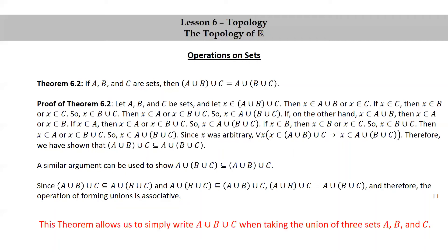This theorem allows us to simply write A union B union C without any parentheses when taking the union of three sets A, B, and C. This is nice because it just makes it more readable, and we can do this because it doesn't matter where you put the parentheses — you get the same answer, so we might as well drop them for easier readability.